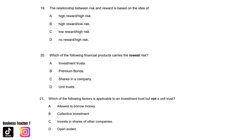Question nineteen: The relationship between risk and reward is based on the idea of: A. High reward, high risk. B. High reward, low risk. C. Low reward, high risk. Or D. No reward, high risk. And the answer is A. High reward, high risk.